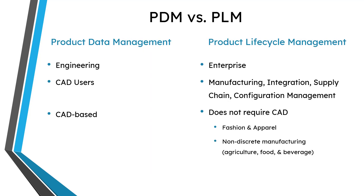Let's talk about some of the key differences between PDM and PLM. First off, product data management is primarily used by engineering organizations, whereas product lifecycle management is used across the entire enterprise. The primary users of product data management are people who drive CAD — computer-aided design software — such as Creo Parametric, CATIA, NX, SolidWorks, or Inventor, whereas product lifecycle management is used by groups like manufacturing, integration, the supply chain, and configuration management.